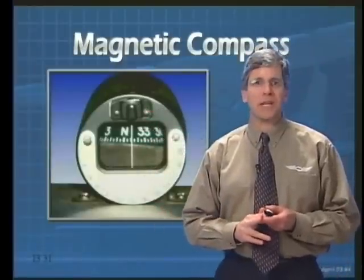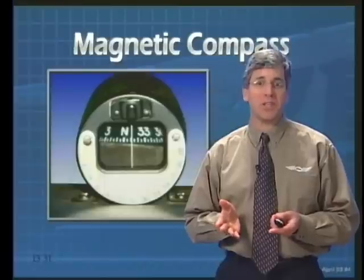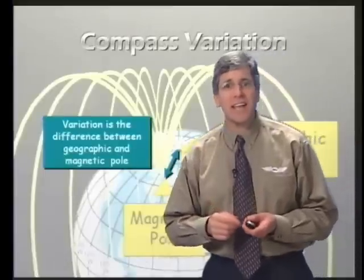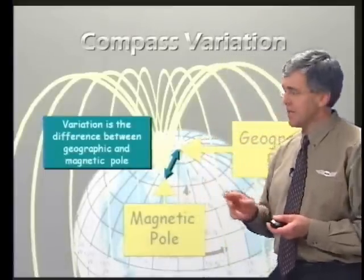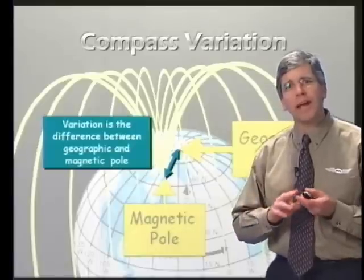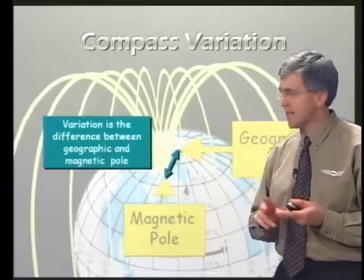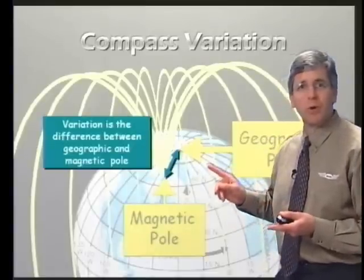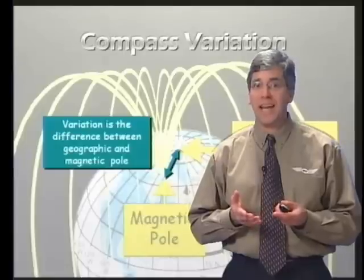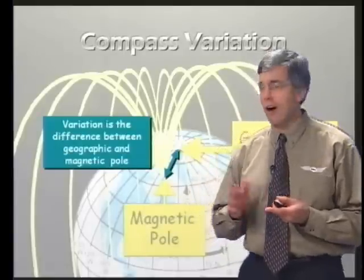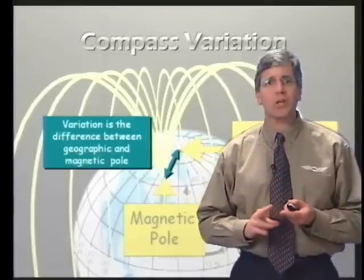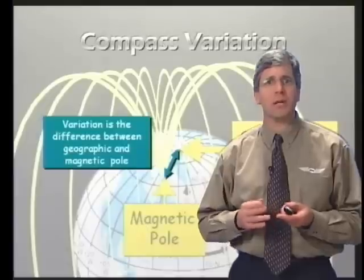The magnetic compass is subject to a number of errors and limitations. One of them is variation. This is the error caused by the compass pointing toward the magnetic north pole, while the aeronautical charts are oriented to the geographic north pole. Variation is not affected by changes in heading, but it does change with the location on the Earth's surface. Aeronautical charts show the amount of variation to be applied.